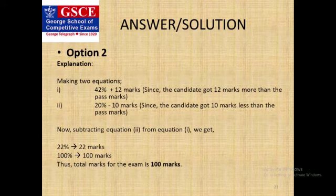One: 42 percent plus 12 marks. Why plus 12 marks? Because the candidate who got 42 percent got 12 marks more. And the second equation should be 20 percent minus 10 marks. Why minus 10 marks? Because the candidate who got 20 percent got 10 marks less.